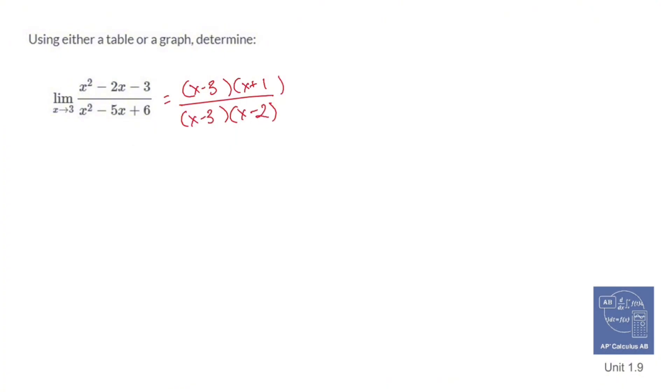Now this is what we have. What we have is a hole at x equals 3, we have a zero at x equals negative 1, and we have a vertical asymptote at x equals 2.